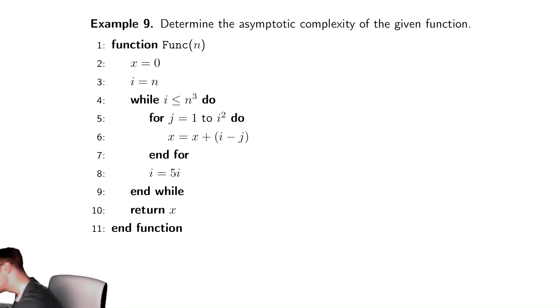Just as we've always done in the past, we begin by analyzing the innermost loop. In this case, that's a for loop. That for loop takes c i squared time, because the inside takes constant time and it runs i squared times.